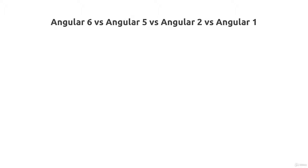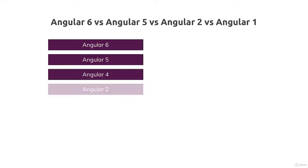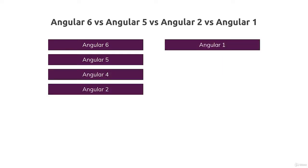So we learned what Angular is, but maybe you also heard about the many different versions Angular has. At least you probably noticed that this course is about Angular 6 right now. So what's up with all these versions? We got 6, 5, 4, 2, 1. What's up with these versions?